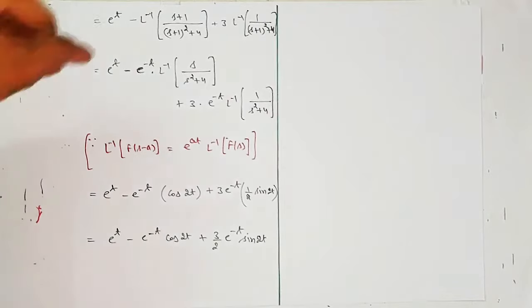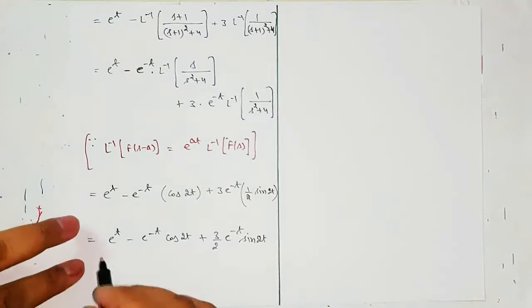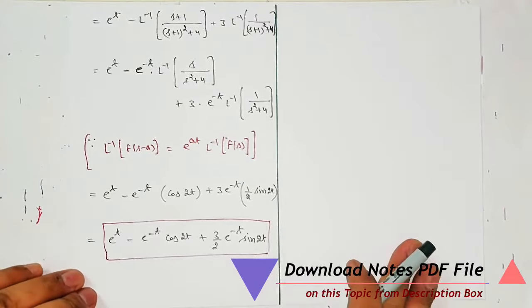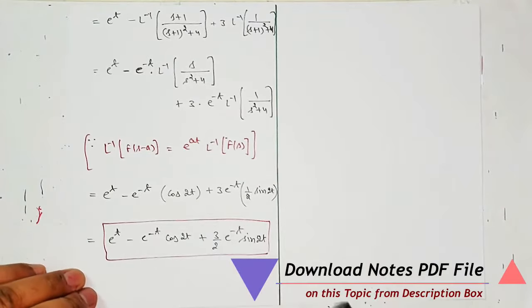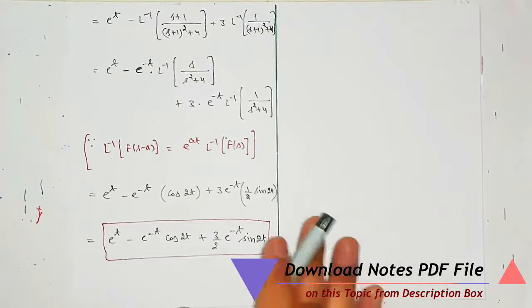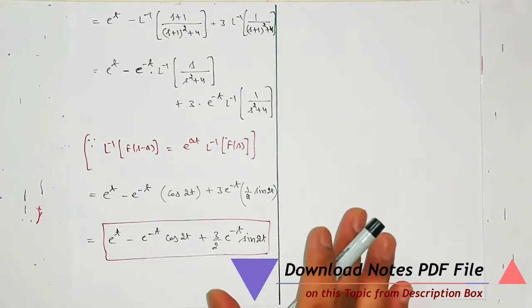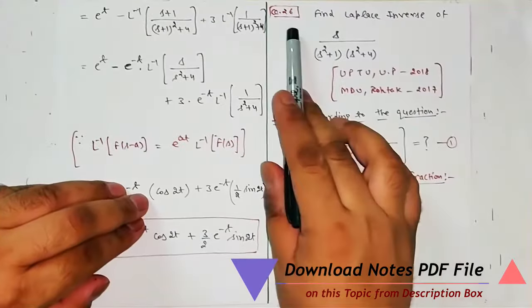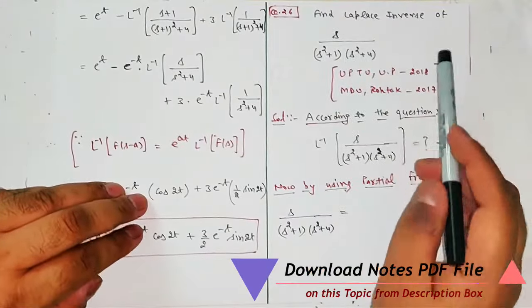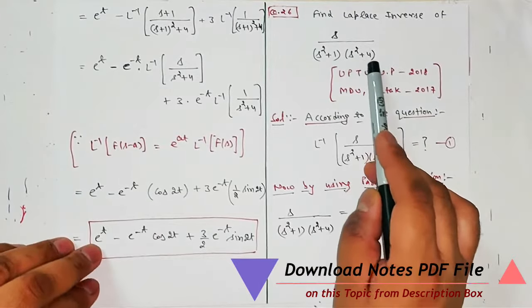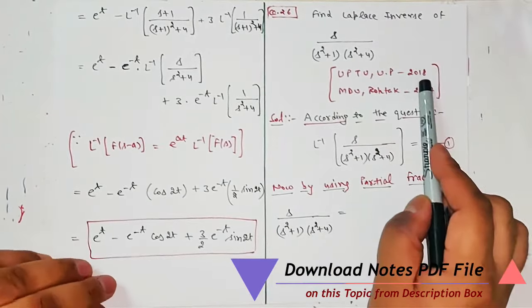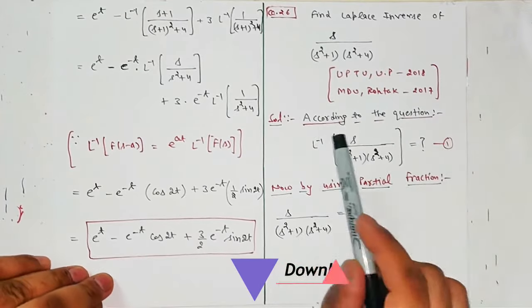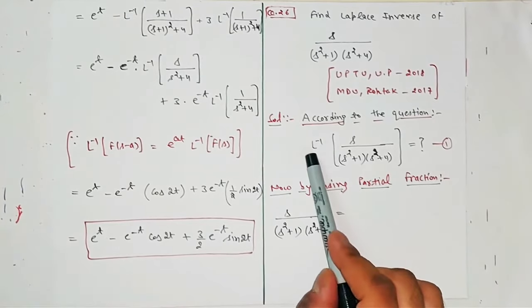This is your answer for this question. Mainly we learned partial fraction here, and the Laplace inverse work is from the previous lecture. Now let us solve one more question of this type — partial fraction with quadratic denominators — so you get a better idea. Find Laplace Inverse of S / ((S²+1)(S²+4)).